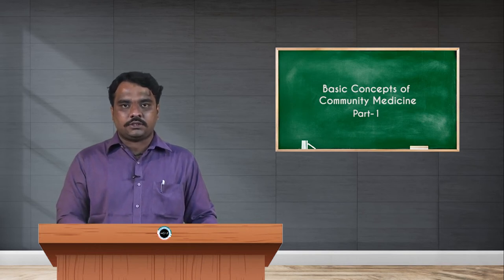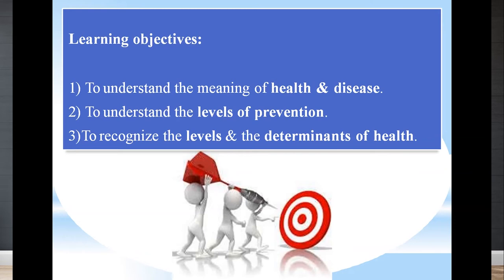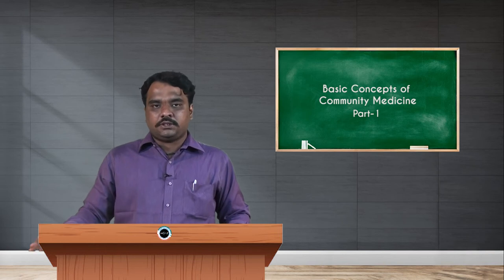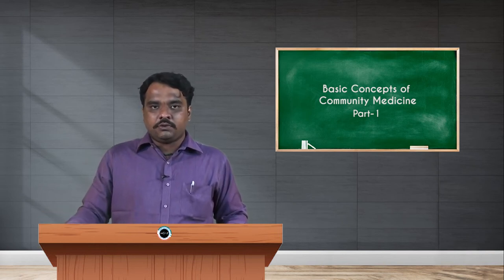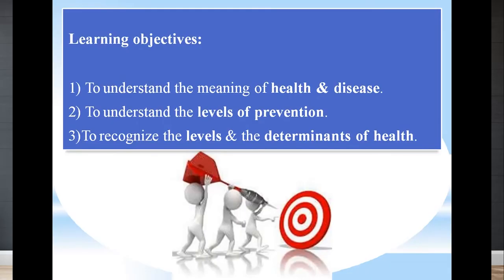Community medicine is also called public health. To understand its basic concepts, we first need to understand the meaning of health and disease. The objectives include understanding levels of prevention, which are divided into three types: primary prevention, secondary prevention, and tertiary prevention — to be discussed in later slides.